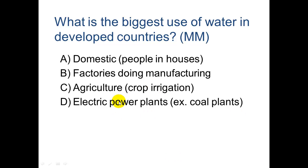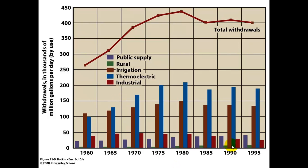When we study energy, we'll learn that most of the energy we produce — at least 85% or so — is produced from burning fossil fuels in electric power plants, like coal and natural gas. You need cooling water for that process. Looking at a diagram from 1960 to about 1995, blue is thermoelectric water use and that is highest, brown is irrigation and that's second highest, then industrial use for manufacturing, and then public supply — water people use every day to bathe, cook, et cetera.